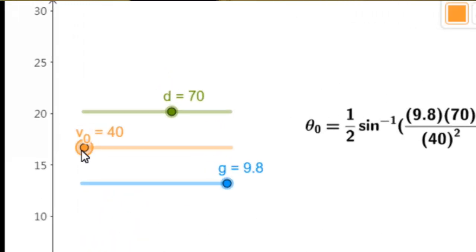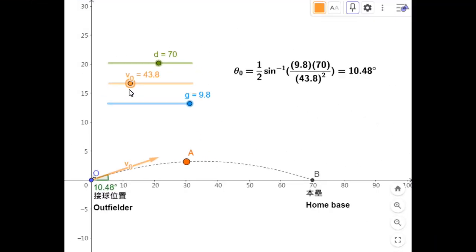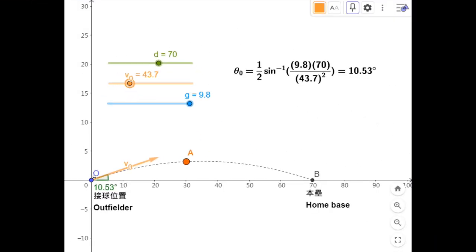If I fix the distance to be, say, 70 meters, and move the initial speed slider, you can see the angle of the pitch changing. For instance, if the initial speed is 41.6 meters per second, which is around 93 miles per hour, then this angle would be 11.68 degrees.